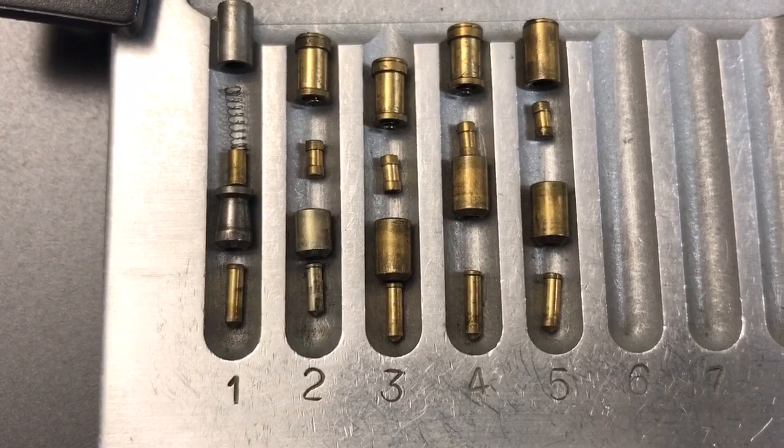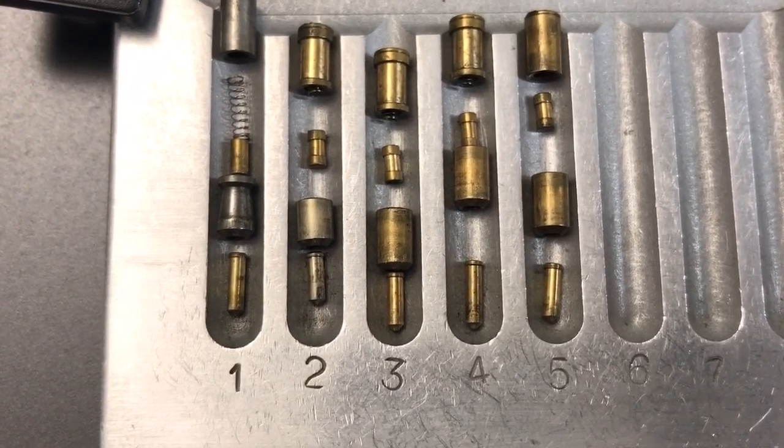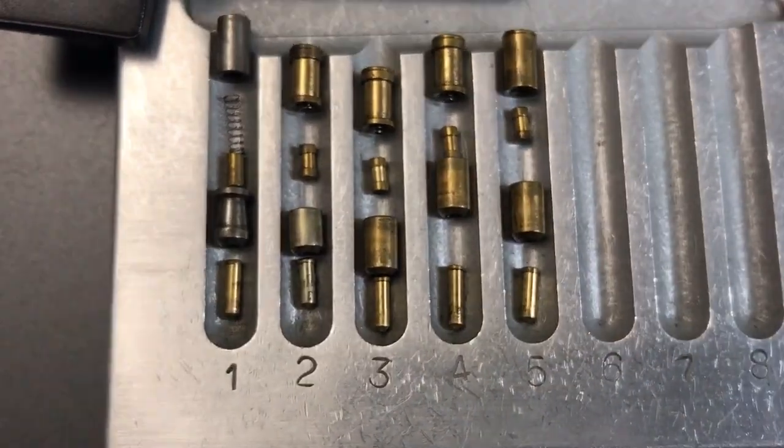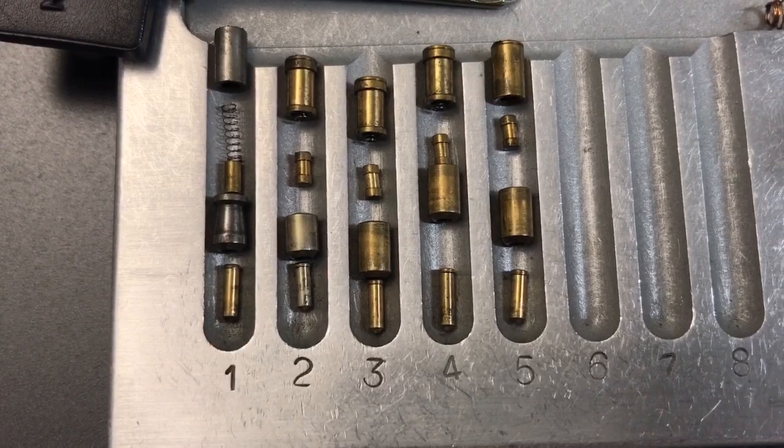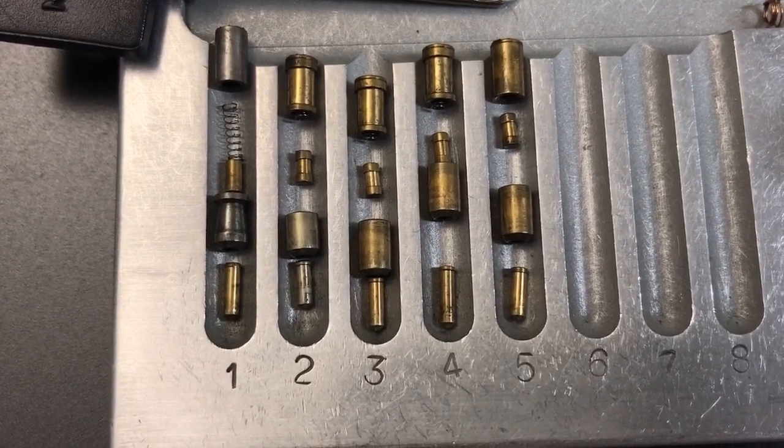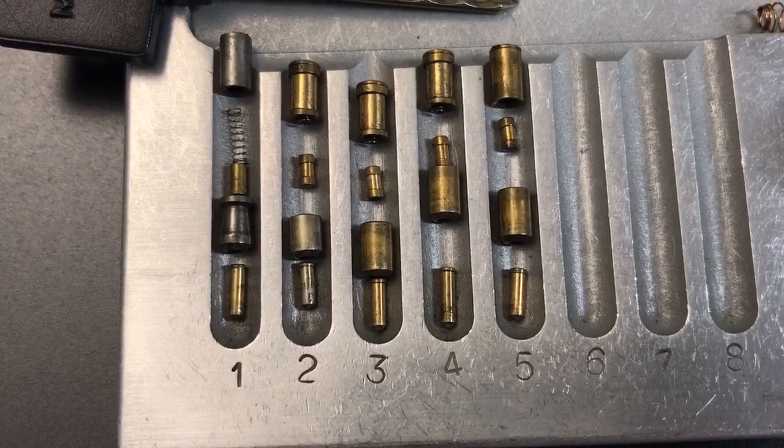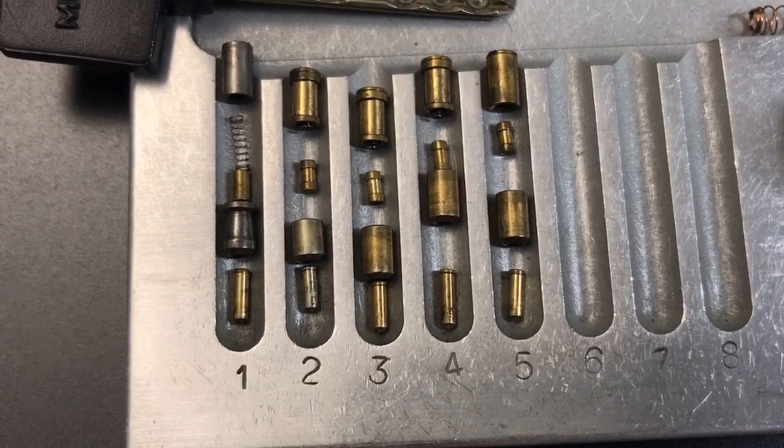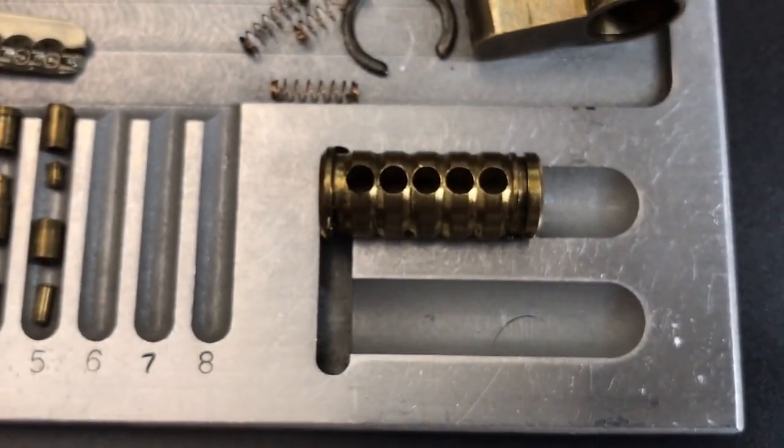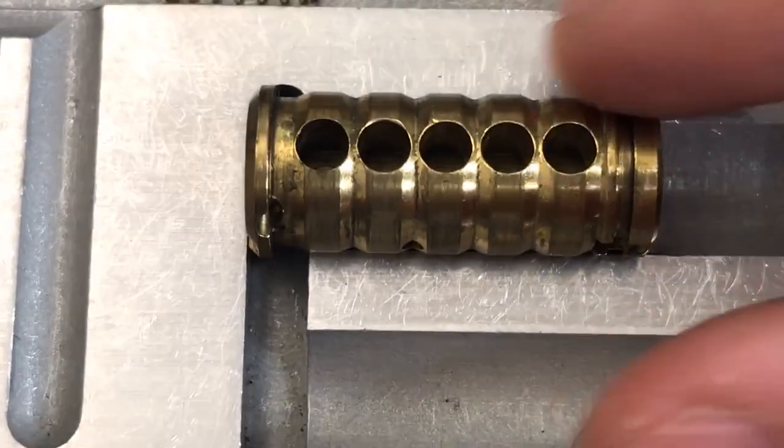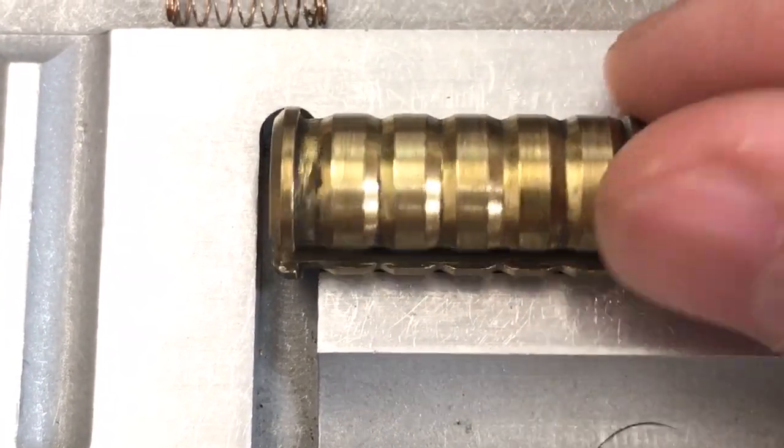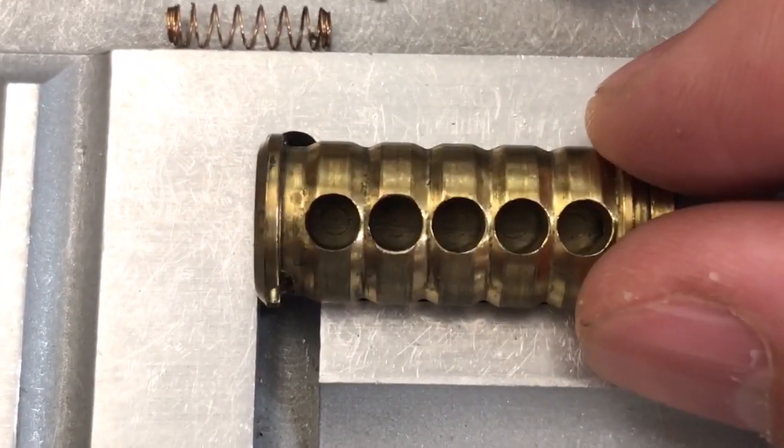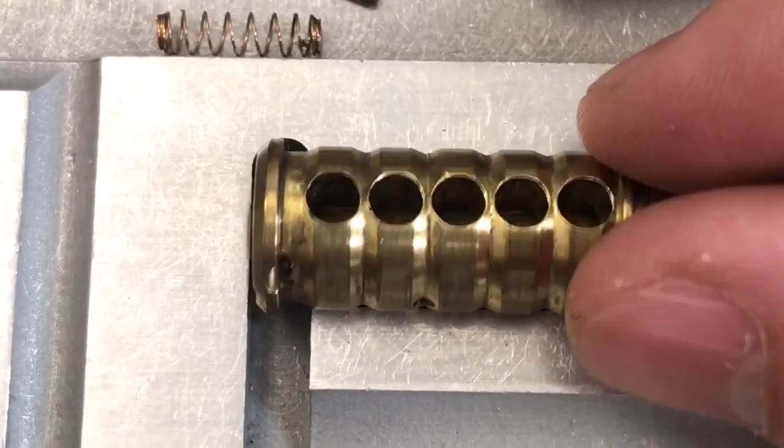As you can see, all of the inner key pins are standard, as are outer key pins 2 through 5. Outer key pin number 1 is very deeply spooled. Then looking at the inner driver pins, number 1 is standard, and 2 through 5 are spooled. Then on the outer driver pins, you can see 1 and 5 are standard, and 2, 3, and 4 are spooled. Moving over to this core, let's take a look at what we have here. Looks pretty standard. We have some drill protection above and below the keyway with 2 hardened inserts. But other than that, nothing much to see here.